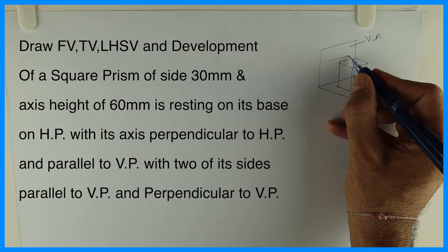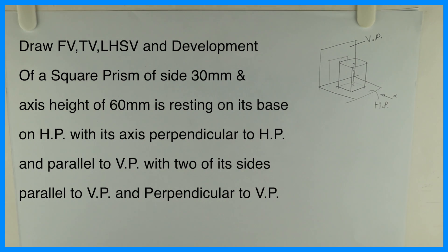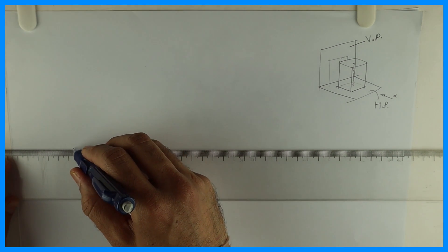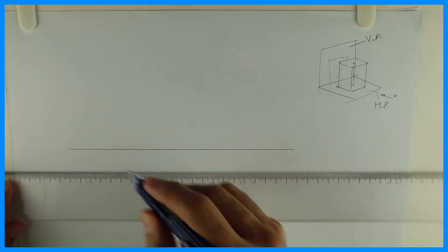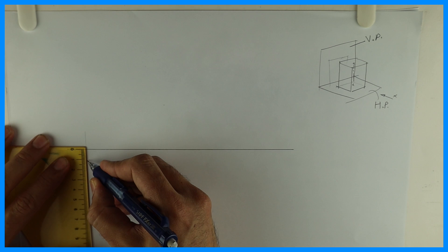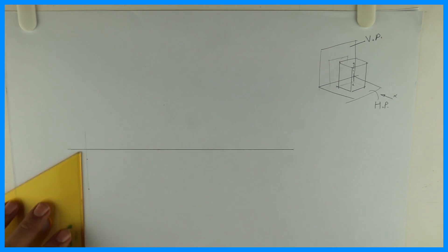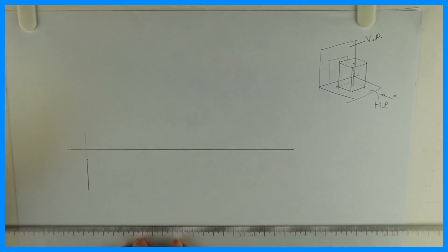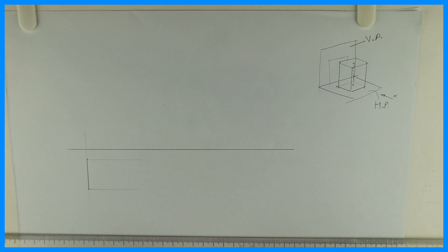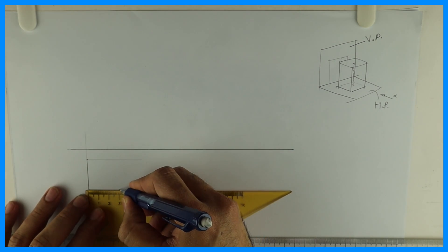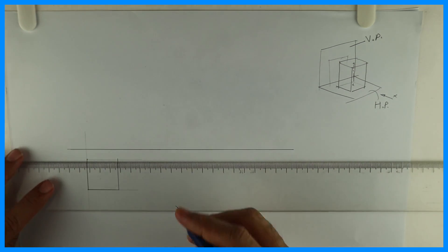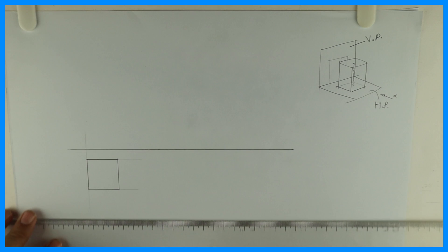Observer is seeing from here. So what he will see, he will see rectangle in front view and square in top view. So we will draw this first. First you will draw XY line. Then I will draw square in top view. Because if you see the diagram, I can see square in top view. Always remember whenever they say axis perpendicular to HP, top view will give you a true shape.